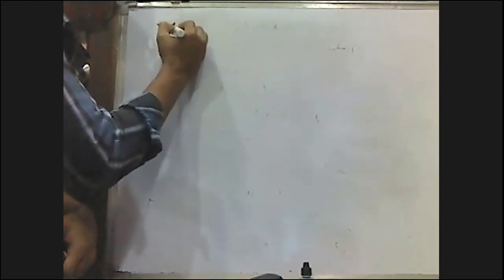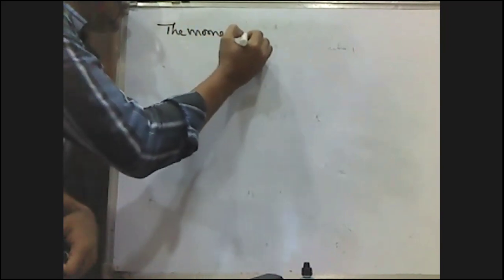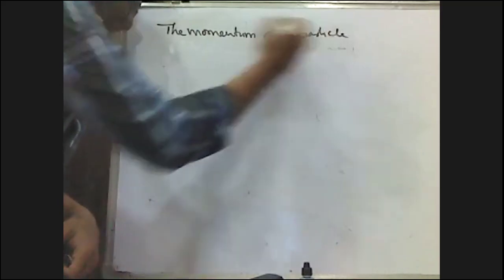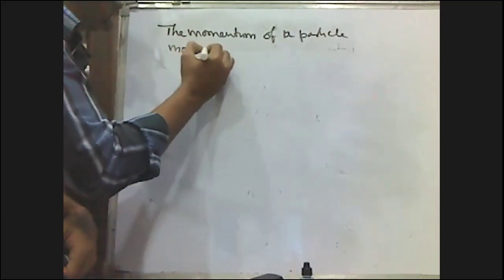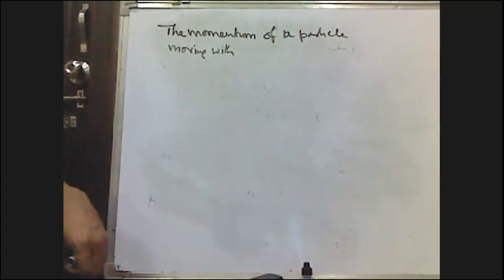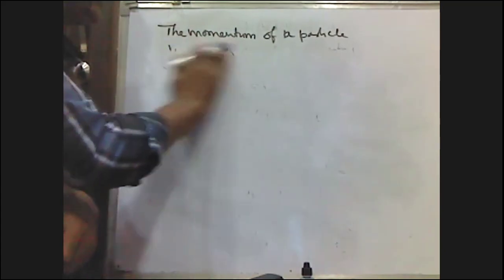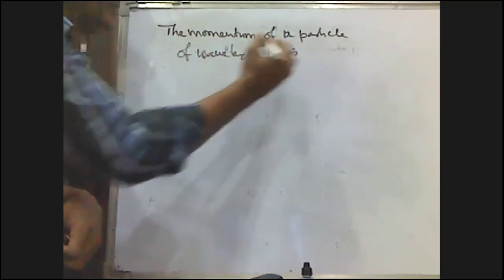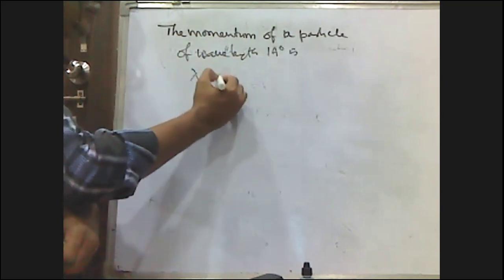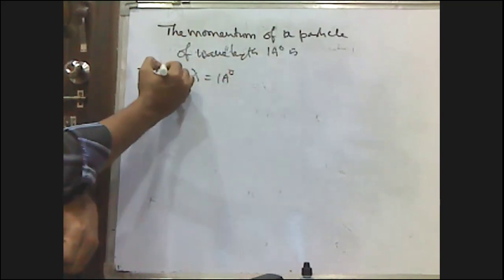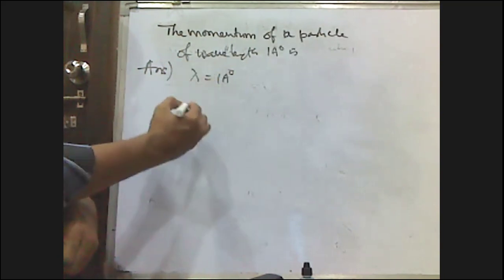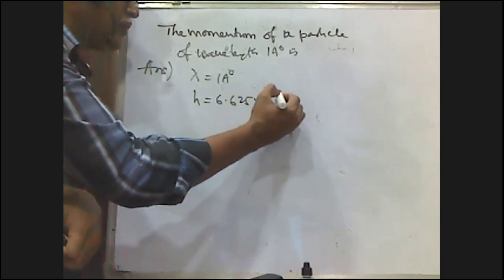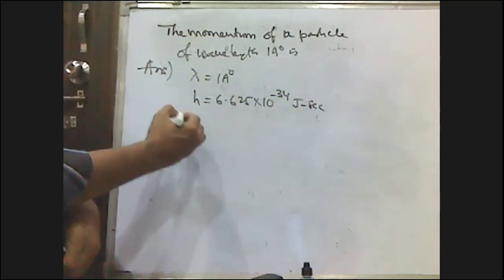The momentum of a particle moving with a wavelength of one angstrom — find the momentum. Given: lambda = 1 angstrom = 10⁻¹⁰ meters. We know H = 6.625 × 10⁻³⁴ joule·seconds. Using lambda = h/p, we get p = h/lambda.